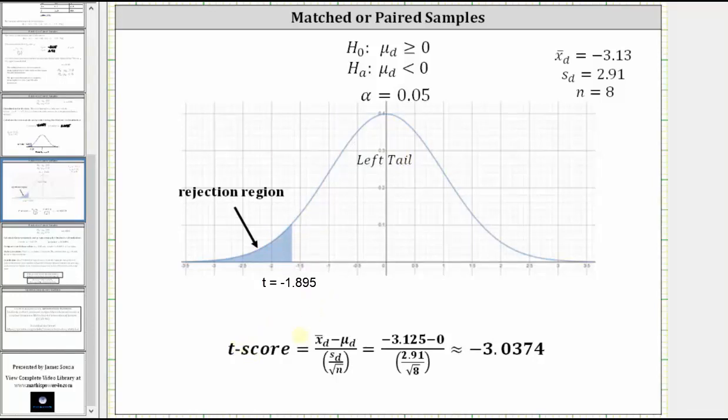Then we would calculate the t-score by hand, which is shown below, which gives us a t-score of negative 3.0374. This is a little bit different than the value from the TI-84 because we are using a rounded value here for the sample standard deviation. Either way, notice how the t-score of negative 3.0374 is in the rejection region somewhere way over here, and therefore we are going to reject the null hypothesis.